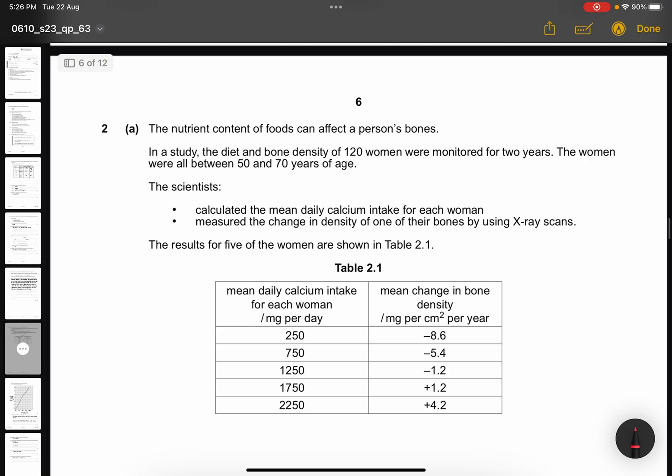Question 2a. The nutrient content of foods can affect a person's bones. In a study, the diet and bone density of 120 women were monitored for 2 years. The women were all between 50 and 70 years of age. The scientists calculated the mean daily calcium intake for each woman and measured the change in density of one of their bones by using x-ray scans.